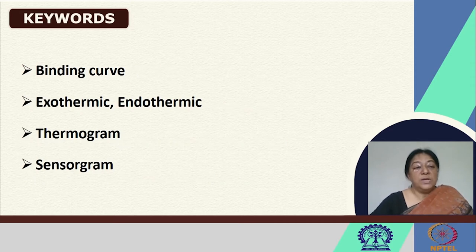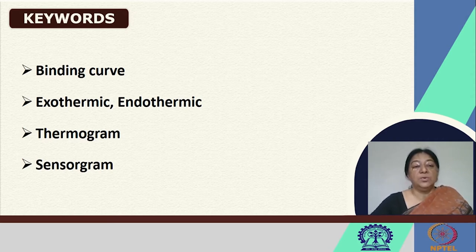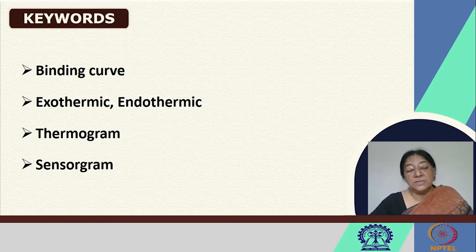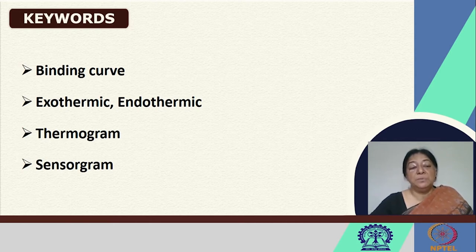For example, we look at the construction of the binding curve. How do we know whether we have an exothermic or an endothermic reaction? Can we discuss the thermodynamic parameters? How are we supposed to determine the thermodynamic parameters from the data that we have?